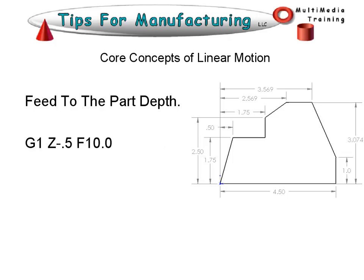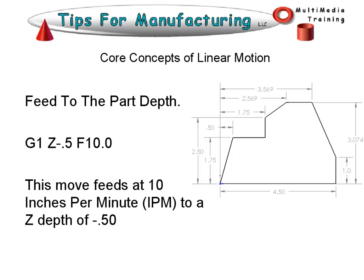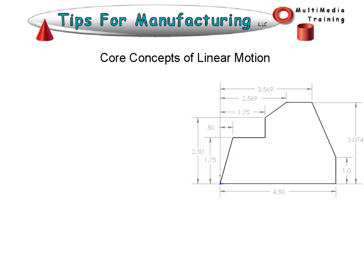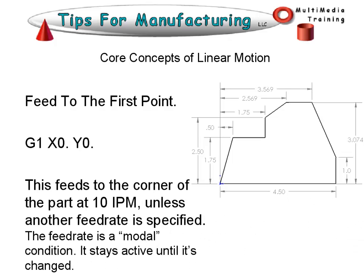Next, we want to feed to the part depth: G1, Z minus 0.5, at a feed rate of 10 inches per minute. This moves to a cutting depth of minus half an inch. Then feed to the first point: G1, X0, Y0. This feeds to the corner of the part at 10 inches per minute unless another feed rate is specified. The feed rate is a modal condition — it stays active until changed. If we want everything at 10 inches per minute from here on, we don't have to specify it again, but we can change it on any individual line.